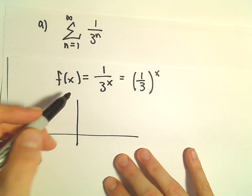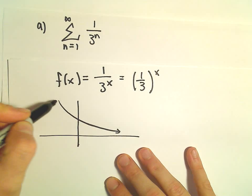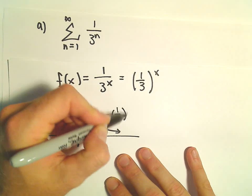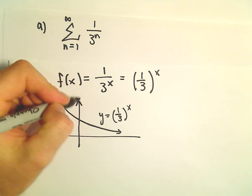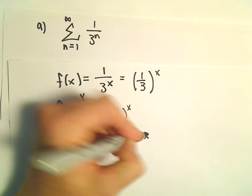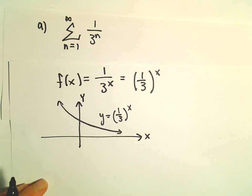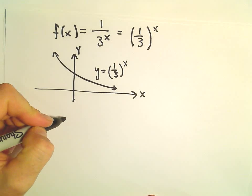y equals 1 over 3 to the x would look like the graph I have here. So certainly we can use the integral test on this because it's continuous, it's positive, and it is decreasing. So this is certainly a problem that we can use the integral test on.